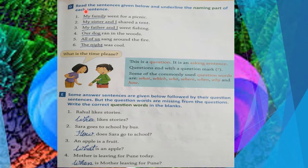Question D: Read the sentences given below and underline the naming part of each sentence. In this question we have to underline the naming part — the subject, meaning the doer of the sentence, whether it is a noun or a pronoun. So the first is: 'My family went for a picnic.'